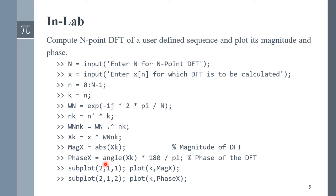We can use the 'abs' command to get the magnitude of the DFT of x(n), and the 'angle' command to get the phase of the DFT of x(n). The angle is multiplied by 180 divided by pi to convert the phase to degrees. We then plot these magnitude and phase values using the 'subplot' and 'plot' commands to display them on the same window.